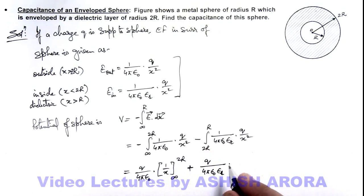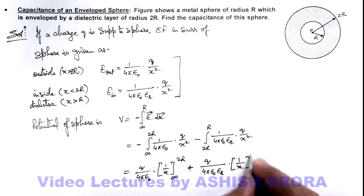And similarly here this will also become positive and it is Q by 4π epsilon not epsilon R, multiplied by 1 by x, and we put the limit from 2R to R.